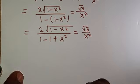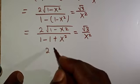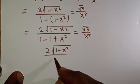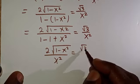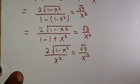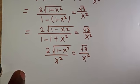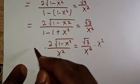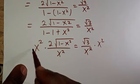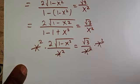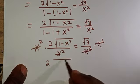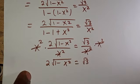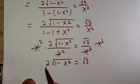1 minus 1 gives 0, so we are left with 2√(1−x²) over x² equals √3 over x². We can see that x² appears on both sides, so we multiply both sides by x² — this cancels this and that cancels that — and we are left with 2√(1−x²) equals √3.